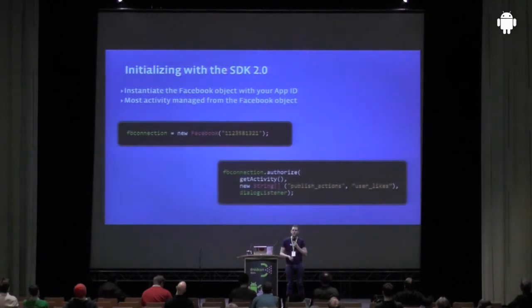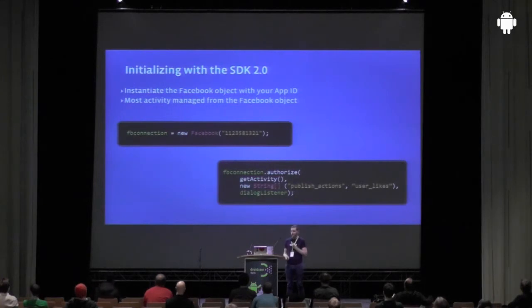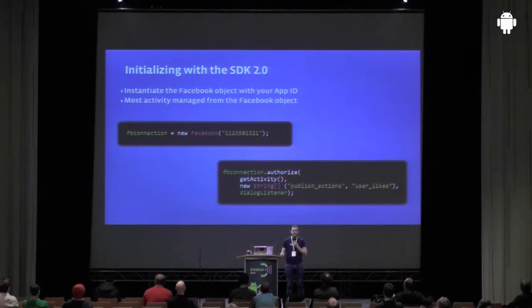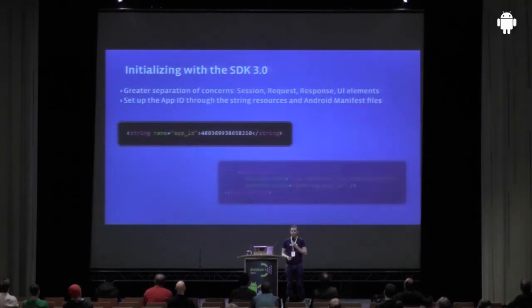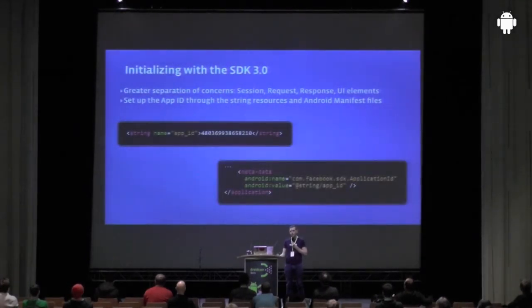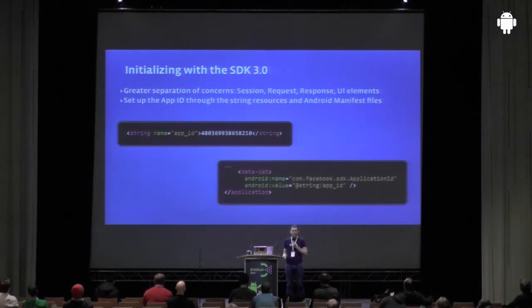Here are some examples of how that's different in the code. With SDK 2.0, you had to create this Facebook object that did everything — you passed in your app ID as a string inside your code, created an FB connection object, and then authorized by calling methods off that. All of that activity was then managed from inside that Facebook object, which was really unwieldy. With 3.0, you do things the way you're supposed to do it in Android — putting string resources for the app ID in one central place, then referring to it inside the Android manifest file. That's just the right way of doing things.